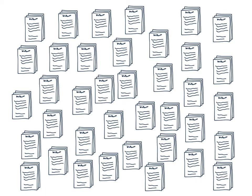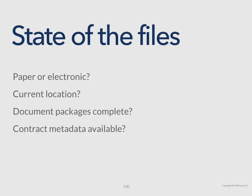The current state of the files probably looks like this: there are documents in lots of different places — maybe on people's personal computers, maybe on network drives that may or may not have had their directory structure maintained. Individual contract documents may not be together, so you may have the main agreement in one place, and the amendment, the schedule, the exhibit, and the statement of work all in different places. You may have paper files, or a mix of paper and electronic. Knowing what you're looking at is really important to start.